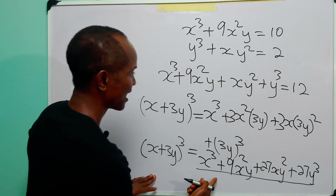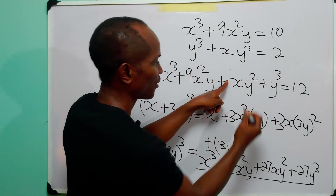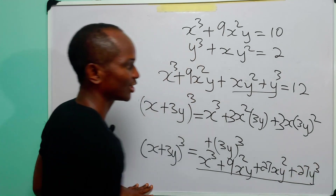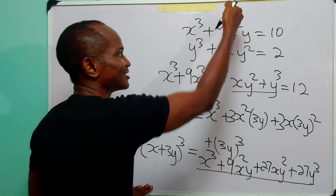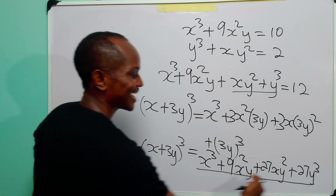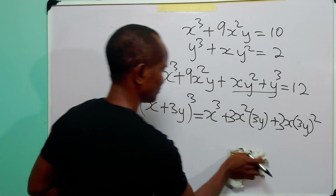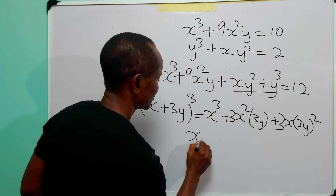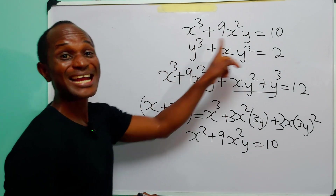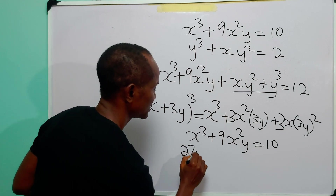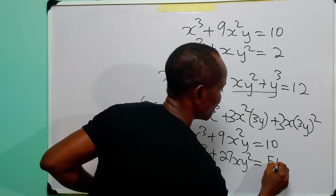Now comparing, we have x³ + 9x²y here, and from the other terms 27xy² and 27y³. So if we multiply the second equation by 27 and add the two equations together, we get (x + 3y)³. Specifically: x³ + 9x²y = 10, and 27y³ + 27xy² = 54.